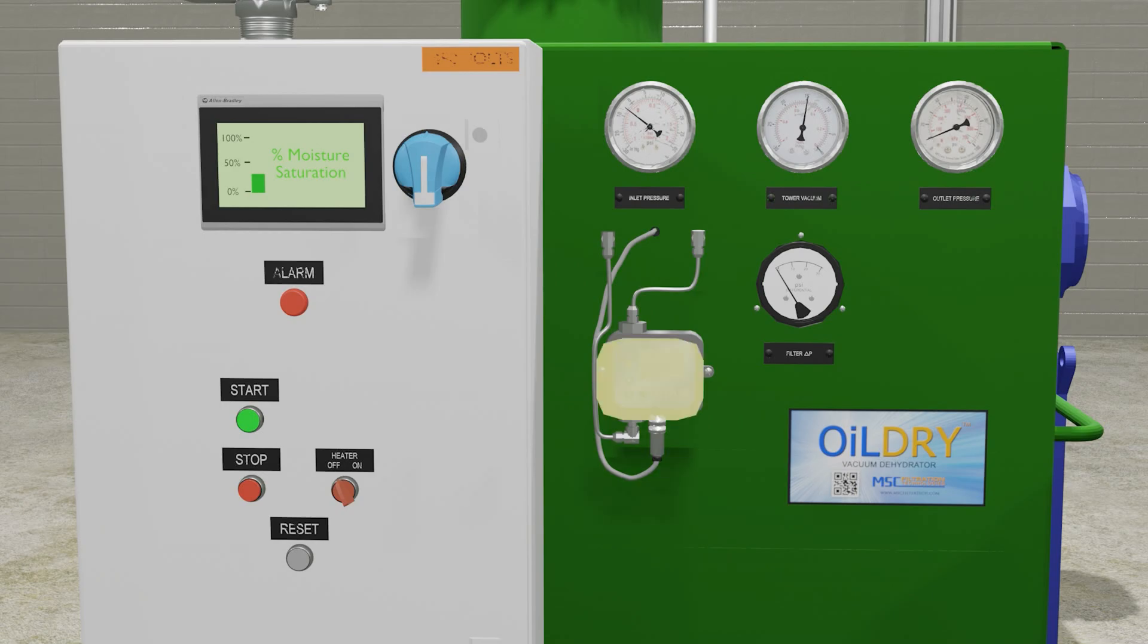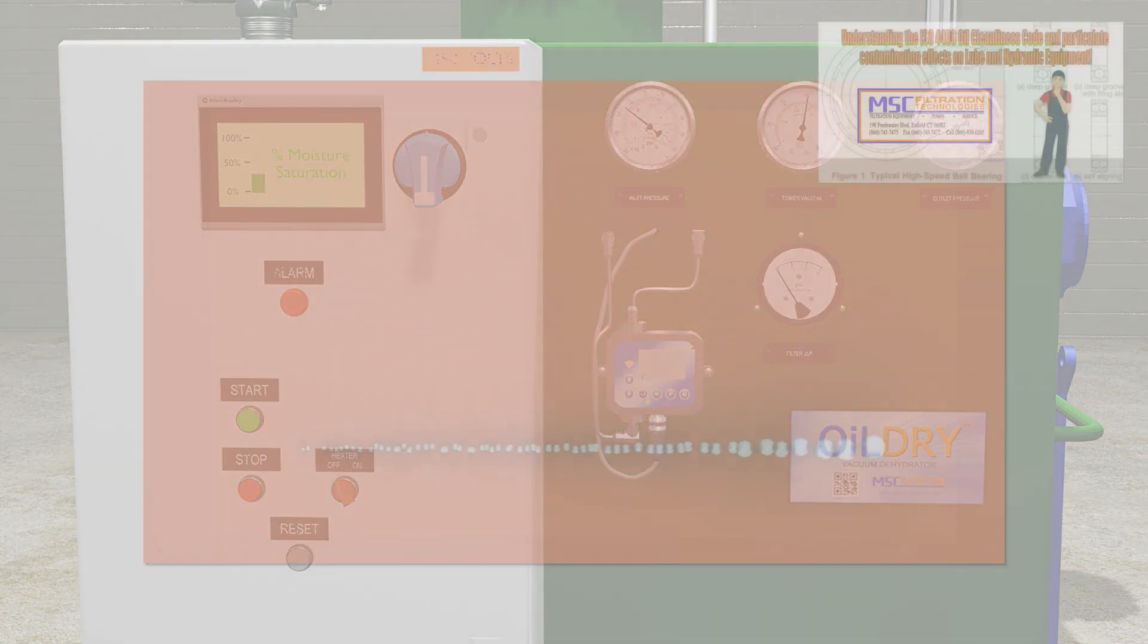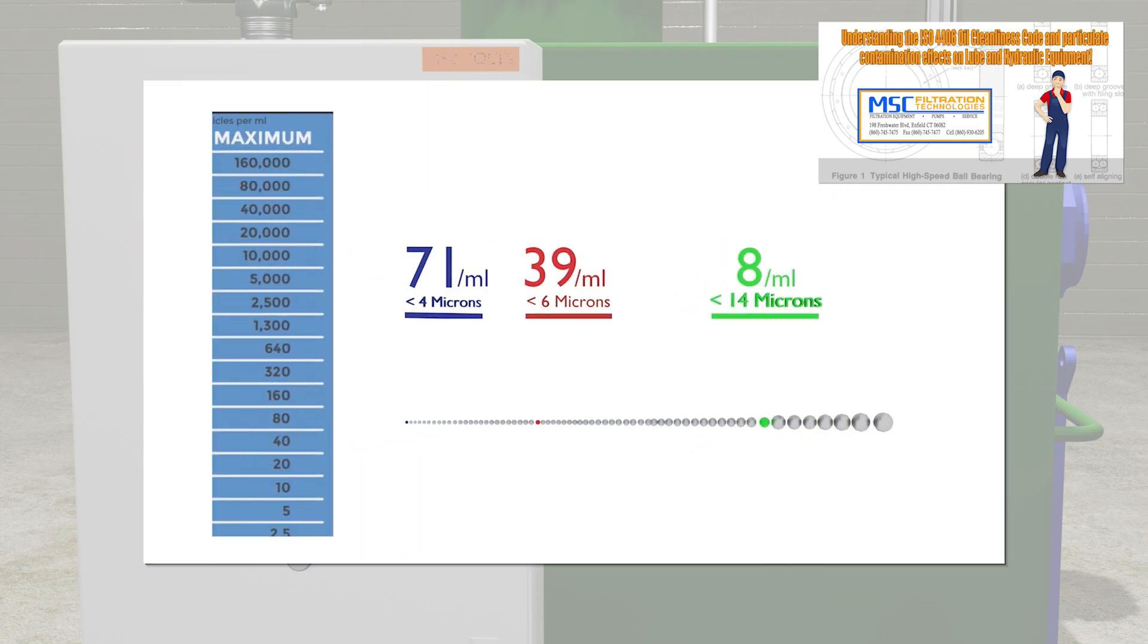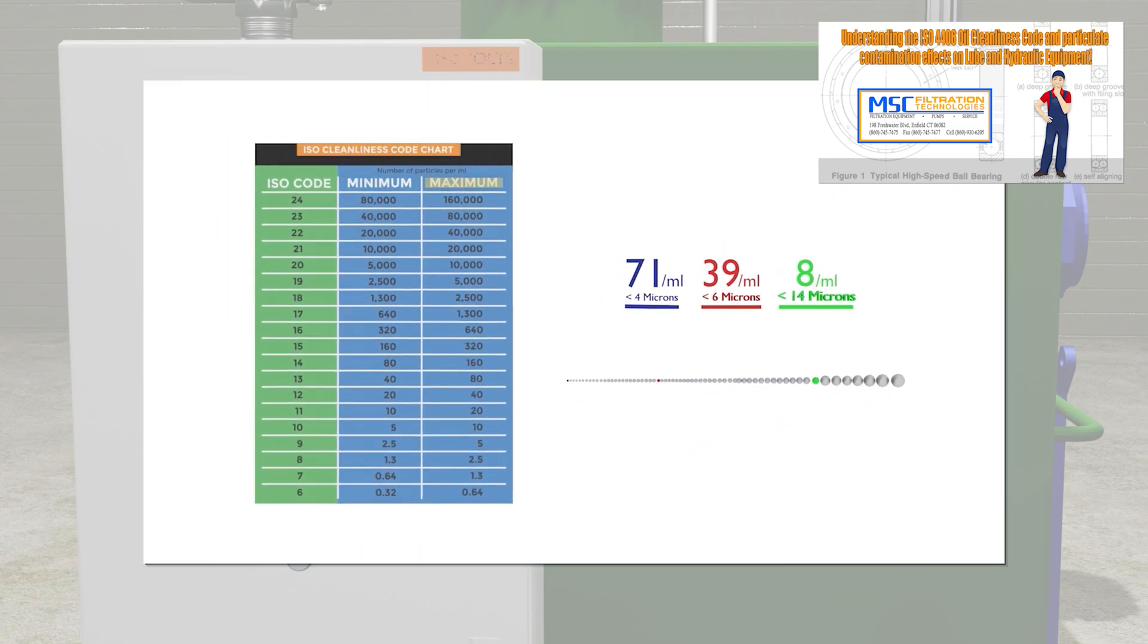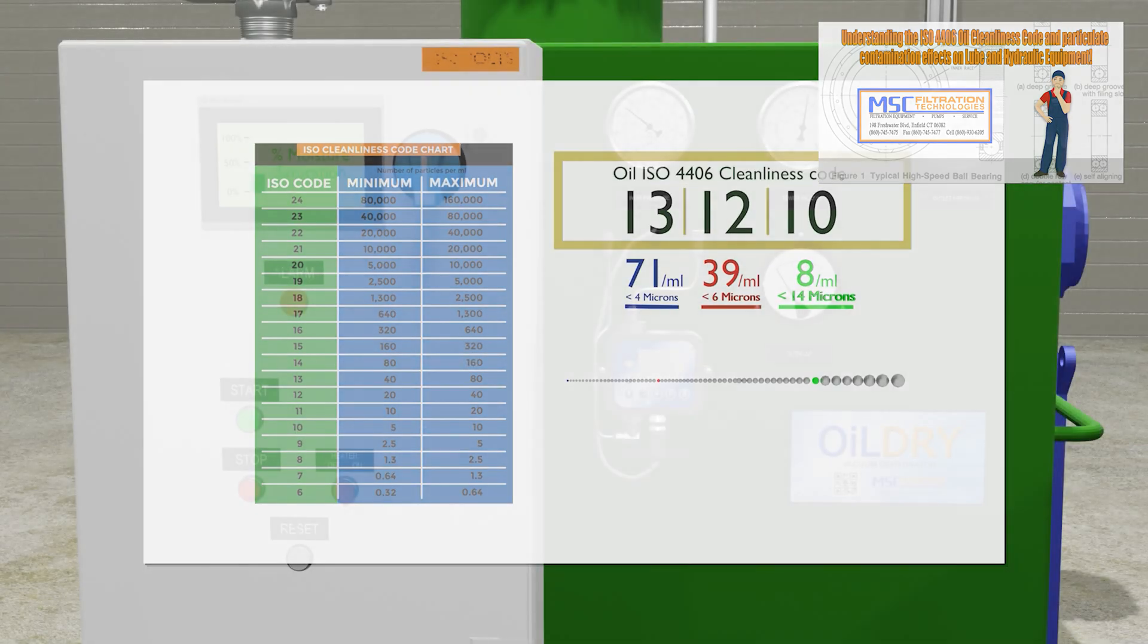For advanced monitoring, the Oil Dry may be supplied with an optional laser particle counter. This allows operators to trend the oil's ISO 4406 particulate cleanliness level in real-time as well. To learn more about the ISO 4406 cleanliness level, please watch our other video previewed in a clip shown here, detailing the importance of maintaining not just low water, but also low particulate levels in your lube and hydraulic oil.